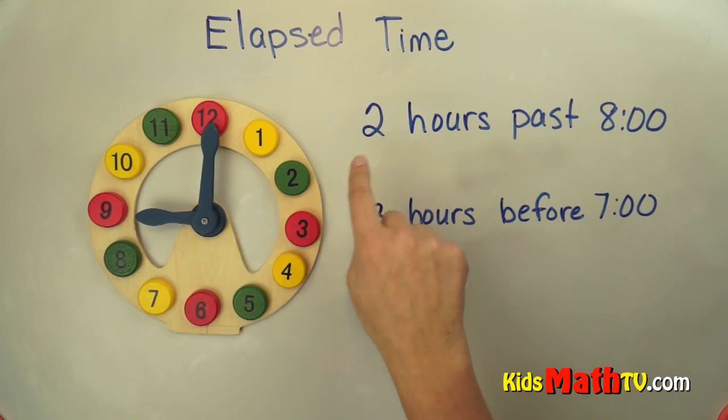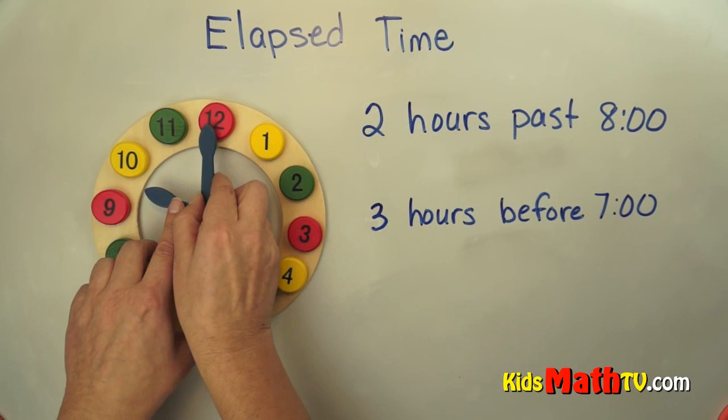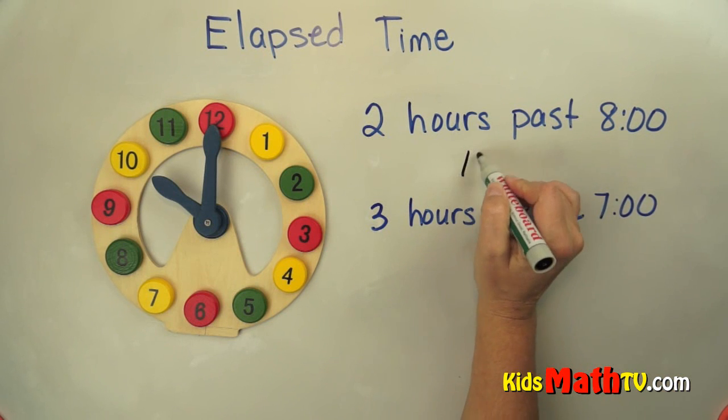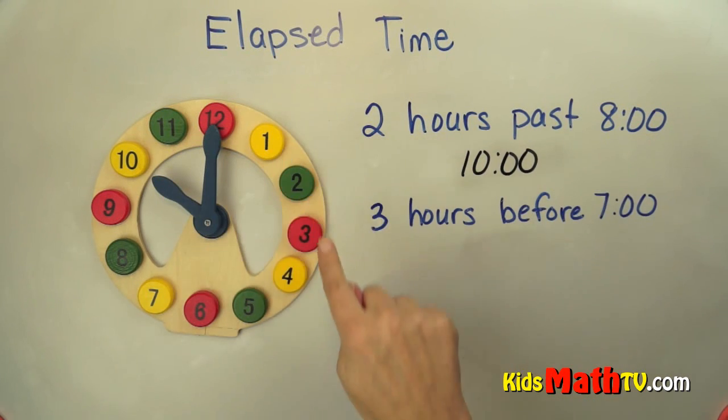Okay, but we want two hours past. So the minute hand has to go all the way around again and now it is ten o'clock. So two hours past eight o'clock is ten o'clock. Okay, and when we're going past something we go clockwise.